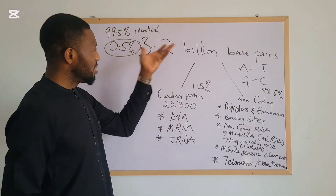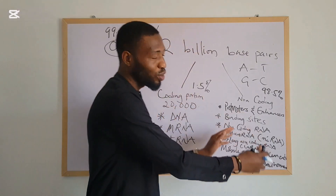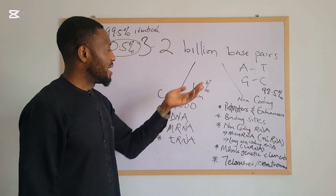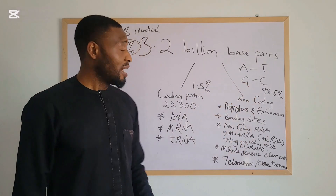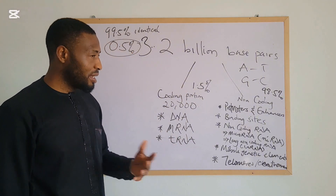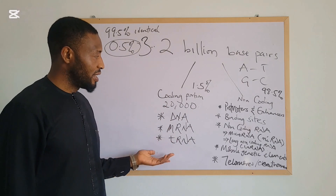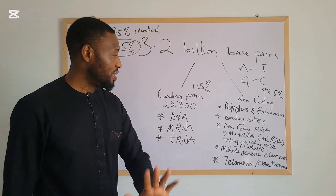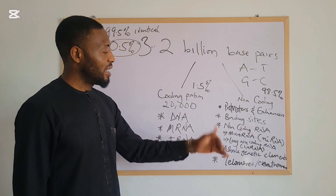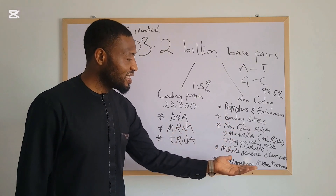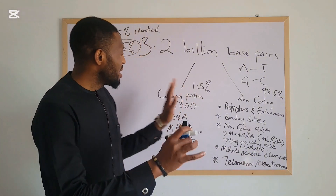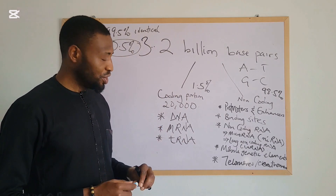A brief overview: our genome is made up of a coding portion and a non-coding portion. The coding portion makes up about 1.5% of the entire human genome — about 20,000 protein-coding genes — composed of DNA, mRNA, and tRNA. The non-coding portion makes up about 98.5% and has five components: promoters and enhancers, binding sites for transcription factors, non-coding RNAs such as microRNAs and long non-coding RNAs, mobile genetic elements, and special components like telomeres and centromeres.